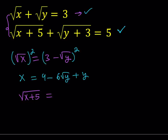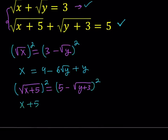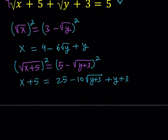So that's going to be 5 minus the square root of y plus 3. I'm going to be squaring both sides here, and that's going to give me something nice. This should give me x plus 5 is equal to 25 minus 10 times the square root of y plus 3, plus y plus 3. Now let's simplify: 25 plus 3 is 28, subtract 5 gives 23. So I can write it as x equals 23 minus 10 times the square root of y plus 3, plus y.